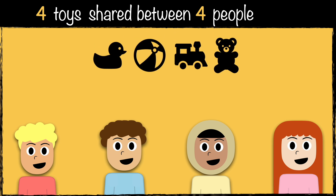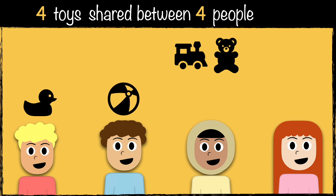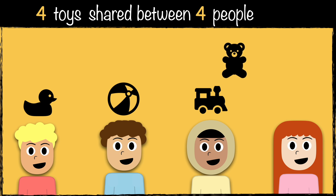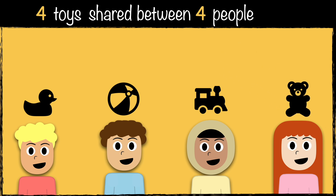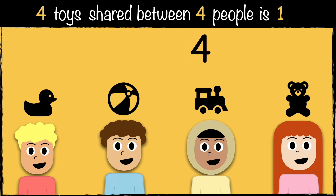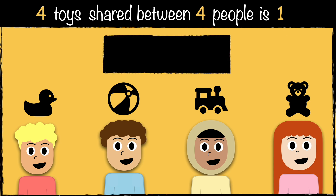Four toys need to be shared equally among four children. Let's divide them fairly: one toy for you, one toy for you, one toy for you, and one toy for you. Each child got one toy. So when we share four toys equally between four people, each person gets one. This is how we write it as a calculation: four divided by four equals one.